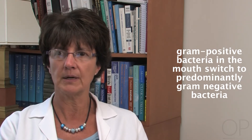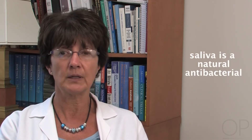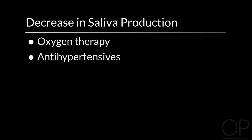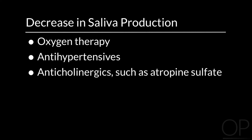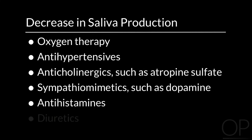Oral hygiene is very important. During severe illness, the predominantly gram-positive bacteria in the mouth switch to predominantly gram-negative bacteria. Gram-negative bacteria thrive in plaque, which can build up on teeth in as little as three days. The process of chewing facilitates the production of saliva, which is a natural antibacterial. However, many patients in the intensive care unit are unable to eat. Saliva production can also be decreased by oxygen therapy, antihypertensives, anticholinergics such as atropine sulfate, sympathomimetics such as dopamine, antihistamines, and diuretics.